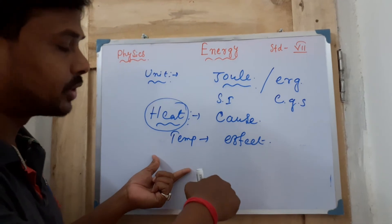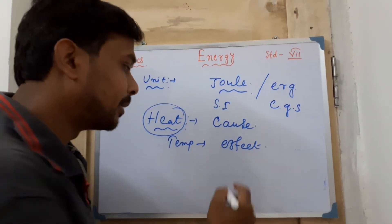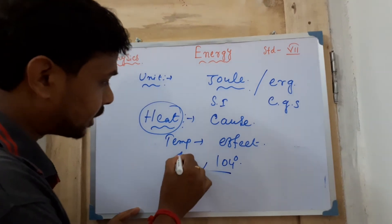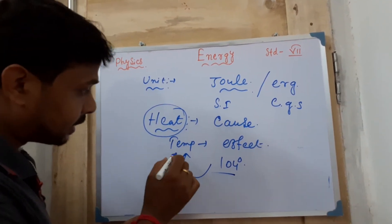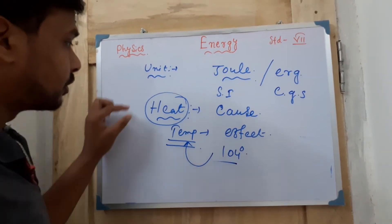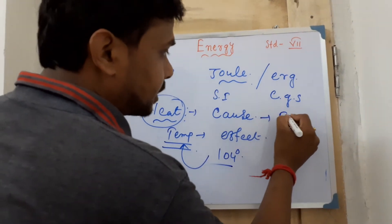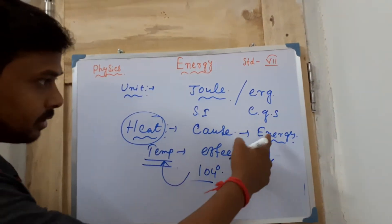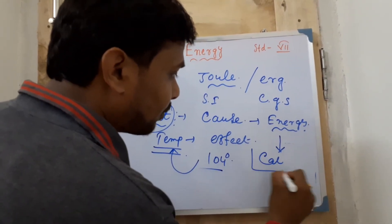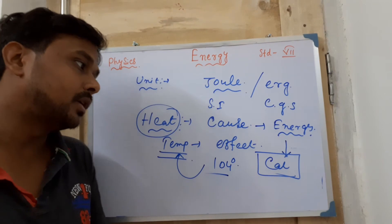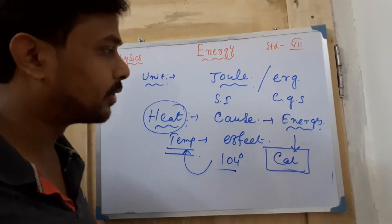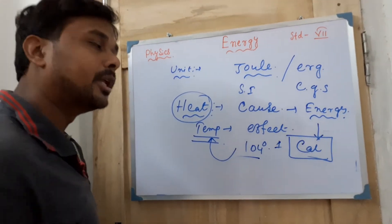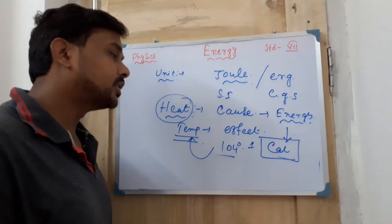For example, the human body temperature during fever may be 104 degrees. This 104 degrees is the calculation of temperature, not of heat directly — but this temperature is coming because of the heat energy present. So heat is one type of energy. If you want to write the unit of heat, that is calorie — written in short as 'cal'. This is the conventional method to write the calorie unit.